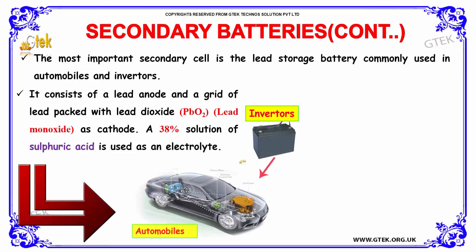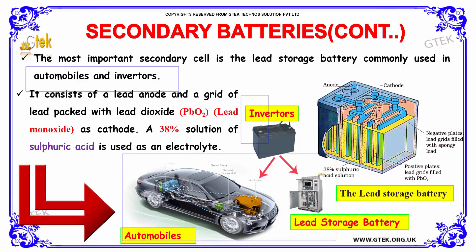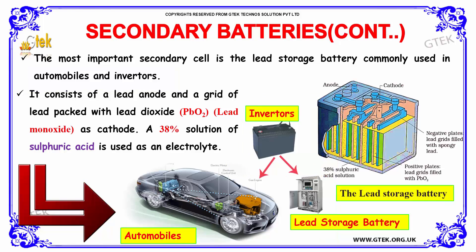This is the depiction of the lead storage battery, which is an example of a secondary cell. The most important secondary cell is the lead storage battery, commonly used in automobiles and inverters, which you can see here. It consists of a lead anode, which you can see here, and a grid of lead packed with lead dioxide as cathode. A 38% solution of sulfuric acid is used as an electrolyte.